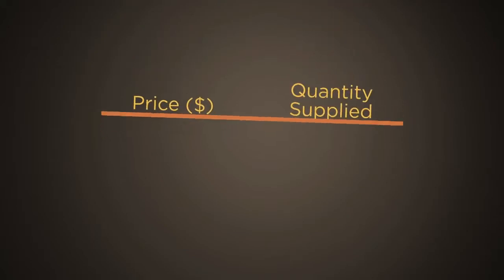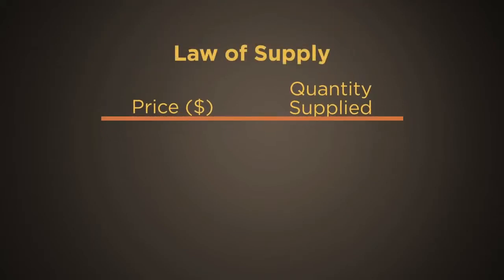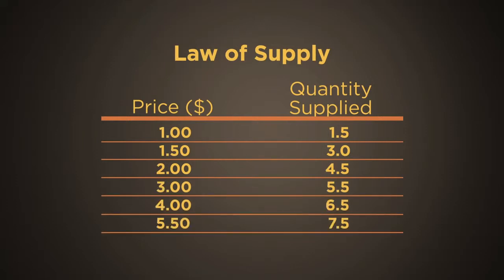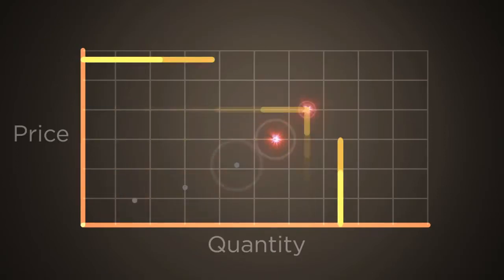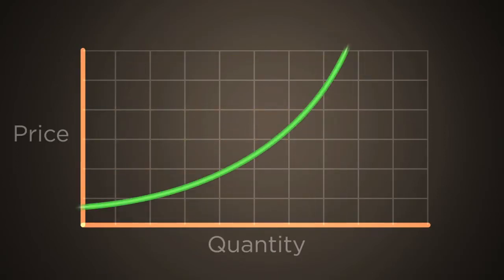Economists refer to the relationship between price and quantity supplied as the Law of Supply. The combination of quantities producers are willing to produce and sell at various prices constitutes a supply schedule. When the supply schedule is graphed, the supply curve is upward sloping.